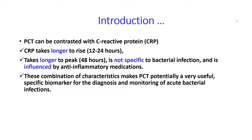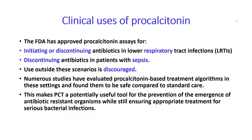This combination of characteristics makes procalcitonin potentially a very useful specific biomarker for the diagnosis and monitoring of acute bacterial infections. The FDA has approved the procalcitonin assay for initiation or discontinuation of antibiotics in lower respiratory tract infections, and for discontinuing antibiotics in patients with sepsis. Use outside these two scenarios is discouraged by the FDA. Numerous studies have evaluated procalcitonin-based treatment algorithms in these settings and found them to be safe compared to standard care, making procalcitonin a potentially useful tool for preventing antibiotic-resistant organisms while ensuring appropriate treatment for serious bacterial infections.